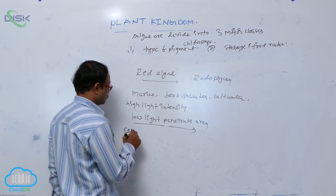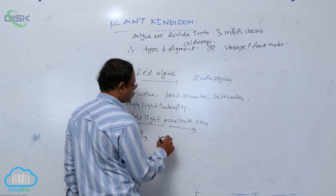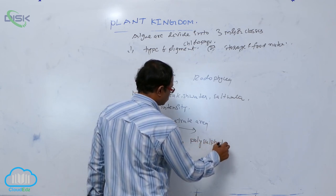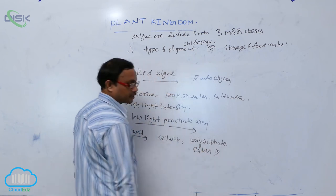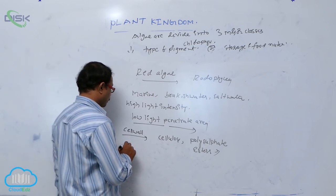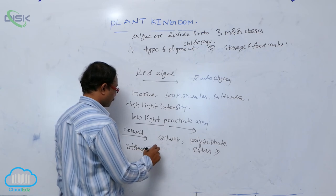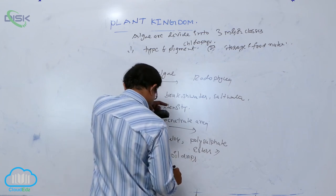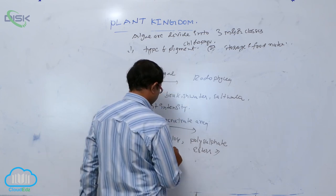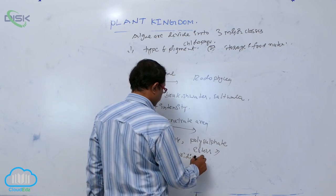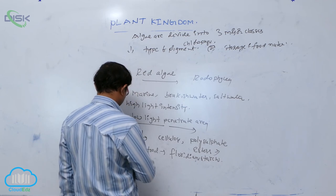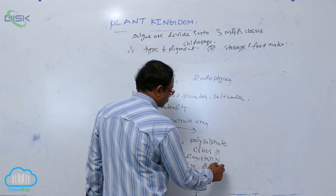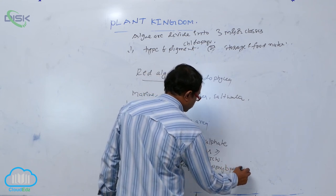The red algae cell wall is made up of cellulose and polysulfate esters. The storage food material is floridian starch — oil drops or glycogen. Floridian starch is an important objective point: it is similar to glycogen or amylopectin.